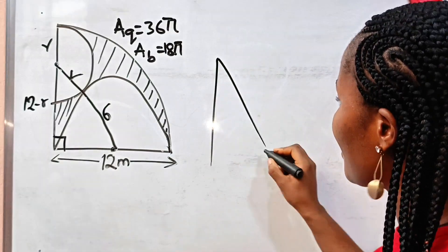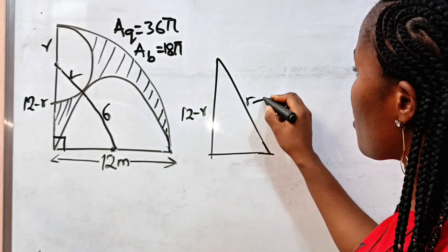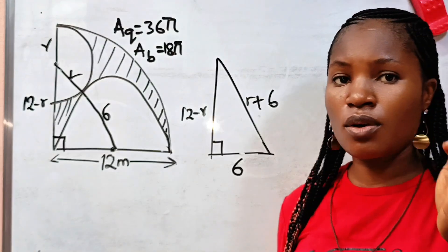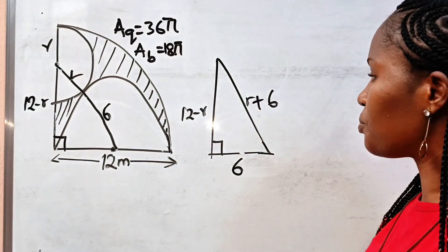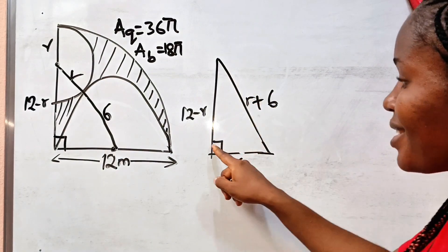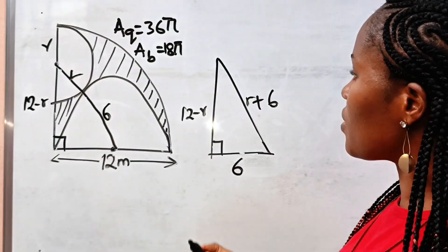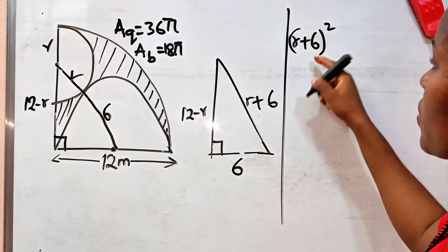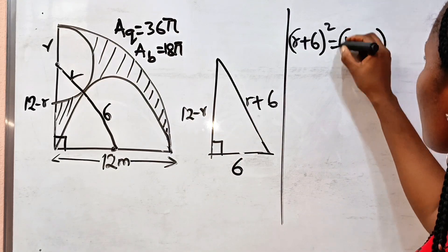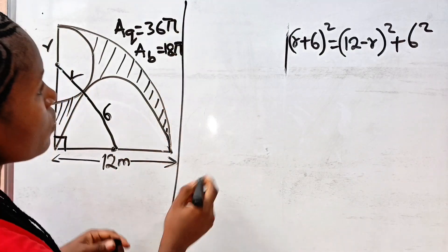We can now draw the triangle that forms. The three sides are: the hypotenuse is r + 6, one leg is 12 − r, and the other leg is 6. Using the Pythagorean theorem, the hypotenuse squared equals the sum of the squares of the two legs: (r + 6)² = (12 − r)² + 6².